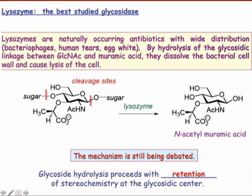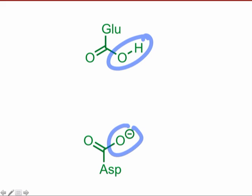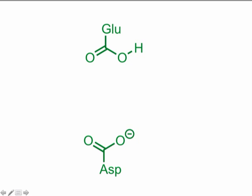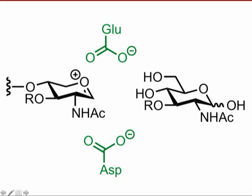The active site of lysozyme is found to contain catalytically active, acidic side chains. In particular, glutamic acid and aspartate residues are proposed to work together in a bifunctional manner to catalyze glycoside hydrolysis. Introducing the substrate, we can imagine cleavage of the key glycosidic bond via general acid-assisted beta elimination. This produces an oxocarbenium ion intermediate whose faces are diastereotopic. To explain the retention of stereochemistry observed in the products of the reaction, we can invoke a nucleophilic addition of the aspartate residue at the electrophilic carbon of the oxocarbenium ion.